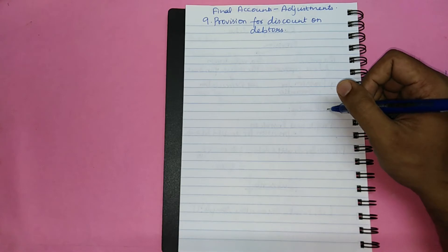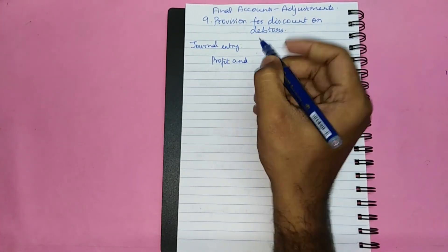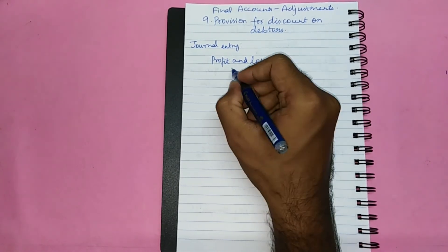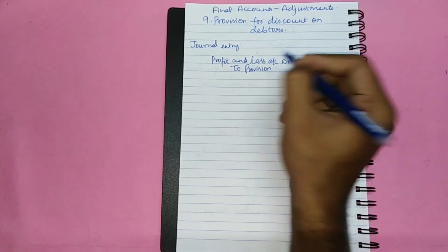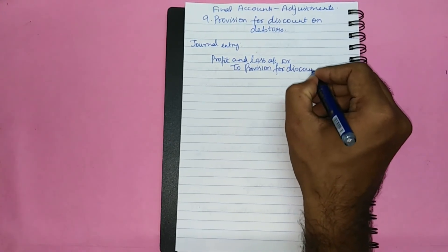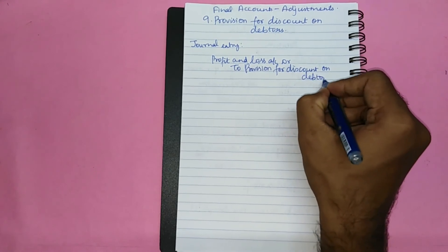As we saw in the previous video, provision will be created by debiting the profit and loss account. Now let us learn the journal entry for recording the provisions for discount on debtors. The journal entry is Profit and loss account debit to provision for discount on debtors account.